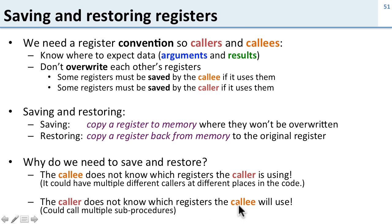And the caller doesn't know which registers the callee is using because you could have multiple sub-procedures. So when you call update, update could call special update. You could have multiple procedures, so there's no way to know who's using what. We need this convention which specifies which registers the callee and caller need to save.